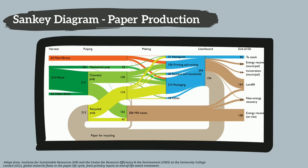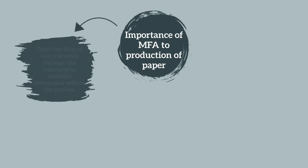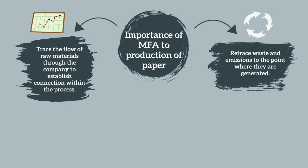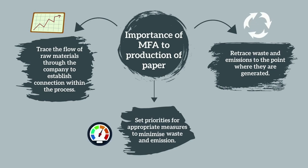We can see that the quantity of material can be measured so that further material management can be implemented. The importance of MFA to production of paper is to trace the flow of raw materials, resource waste and emissions, and set priorities for appropriate measures.